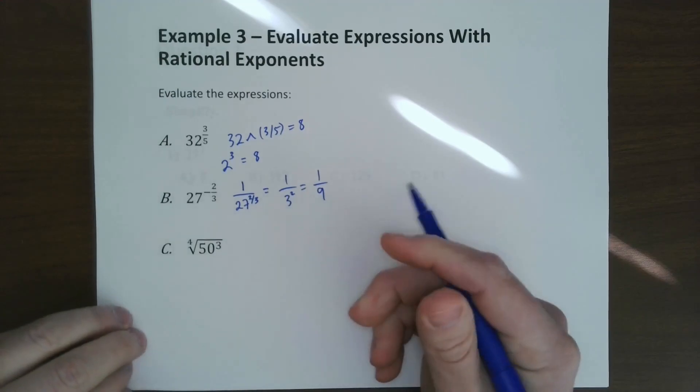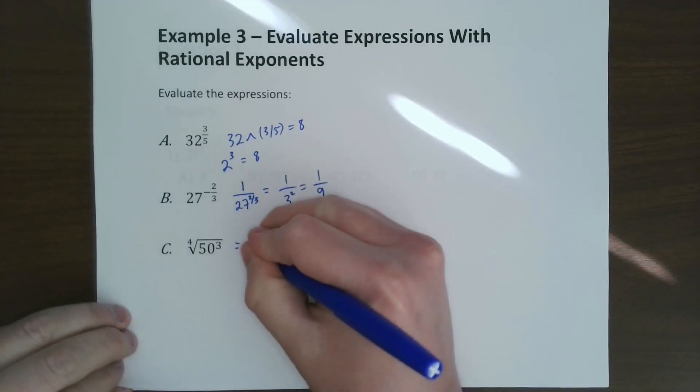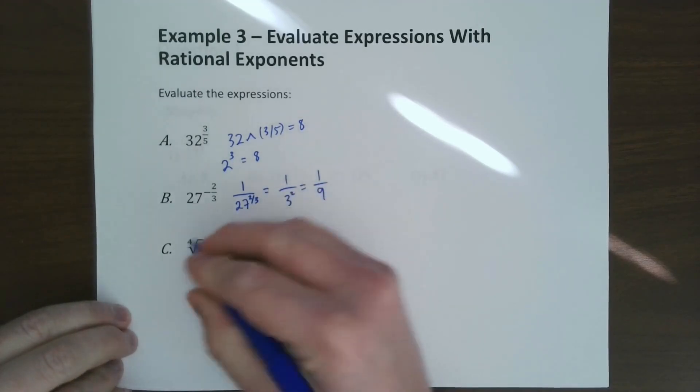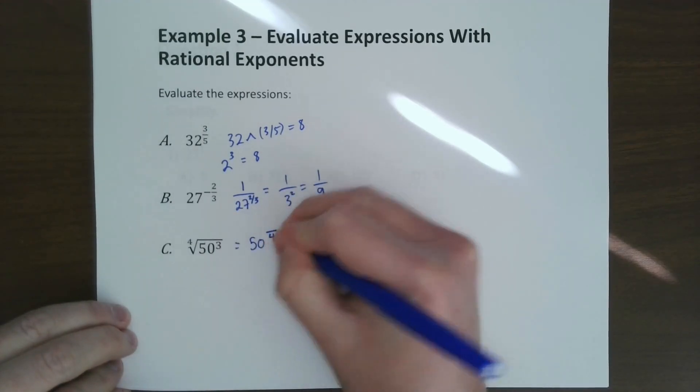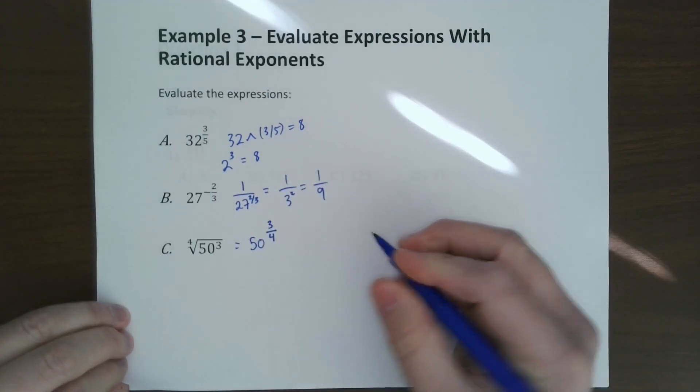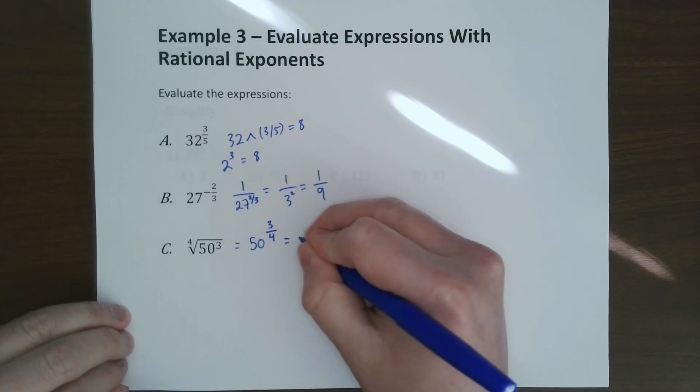If it's already a radical, let's write it as a fractional exponent. So 50. Since 4 is connected outside, we go 4, 3 goes on top because it's the exponent. Now all we've got to do is type this in a calculator, and you get around 18.8.